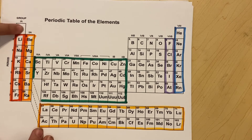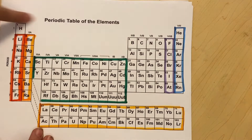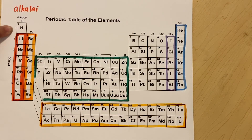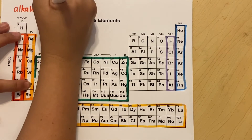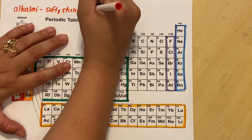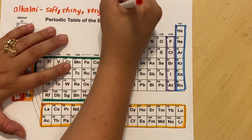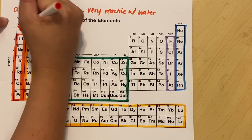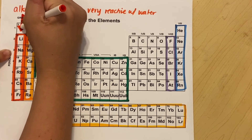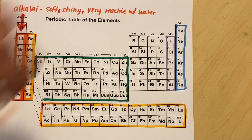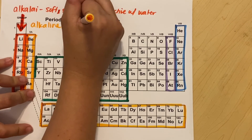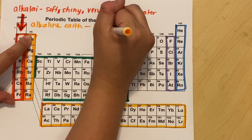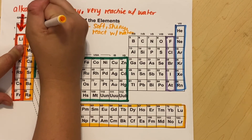Here are your alkali metals — make sure you don't include hydrogen. Hydrogen's a gas; hydrogen's a weirdo. Everything else in group 1A is going to be your alkali metals. These are soft, shiny metals that are very reactive with water. Then you get your alkaline earth metals, which are also soft and shiny metals, but they're less reactive with water. These are the whole group 2A right here.